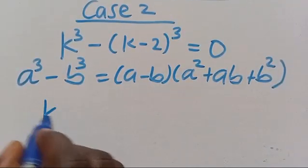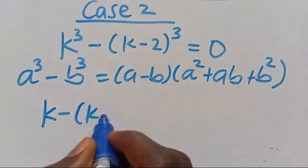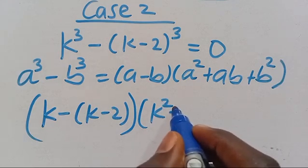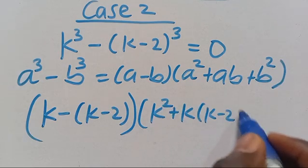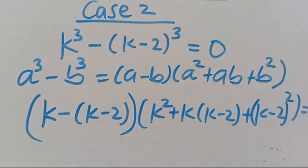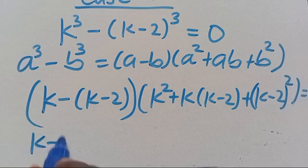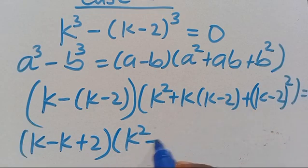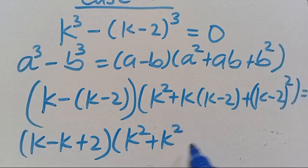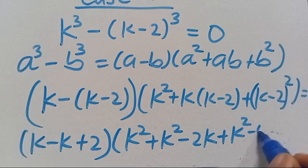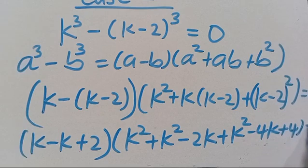Applying it here, we get K minus K minus 2 in parentheses, then multiplied by K squared plus K times K minus 2, plus K minus 2 in parentheses to the power of 2, equals 0. Opening this gives K minus K plus 2, here we get K squared, then minus 2K, and the expansion of K minus 2 squared gives K squared minus 4K plus 4, equals 0.